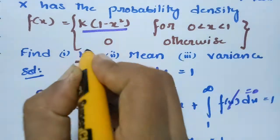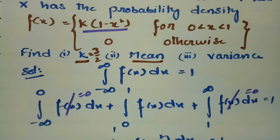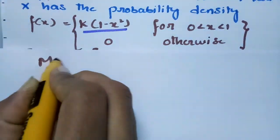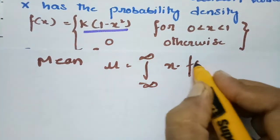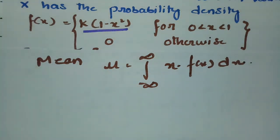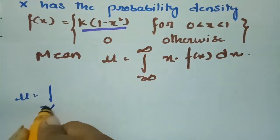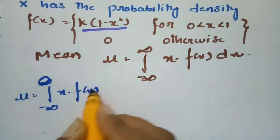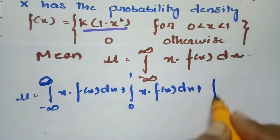With k = 3/2 found, we next find the mean. The mean μ is given by the integral from minus infinity to plus infinity of x times f(x) dx. Again we split into three parts, but since f(x) is nonzero only on (0,1), only the integral from 0 to 1 of x times f(x) dx contributes.